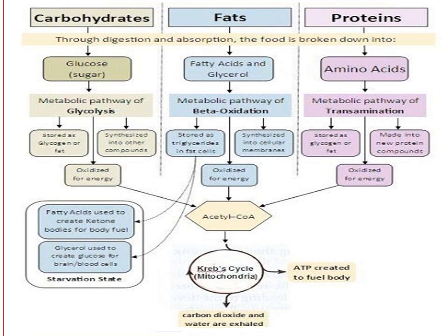During fasting and starvation, fat is stored in fat cells. Fatty acids are broken down to create ketones as an alternative body fuel. Glycogen is used to create glucose for the brain and blood cells. During vigorous exercise we use stored fats, releasing fatty acids. Proteins get cleaved into amino acids. Excess amino acids are stored as glycogen or fat, and are also used in oxidation and transamination processes, releasing energy.